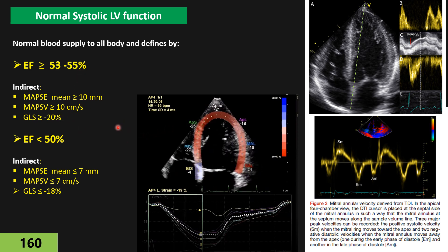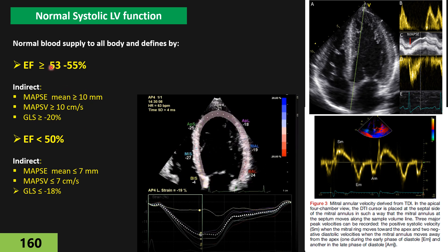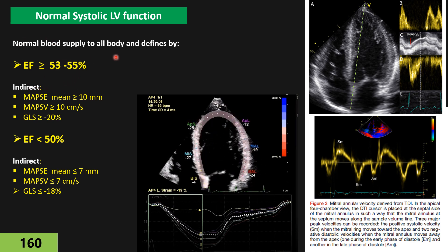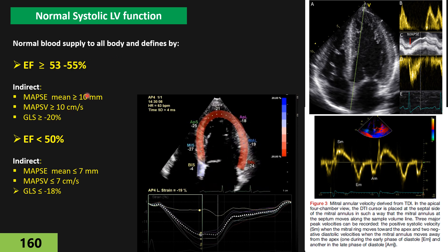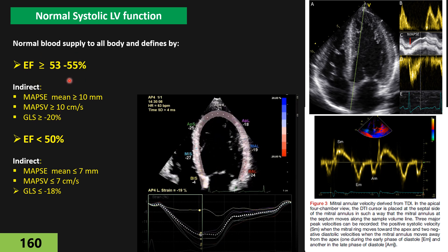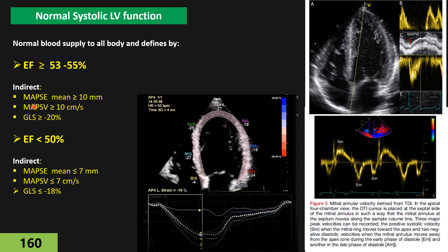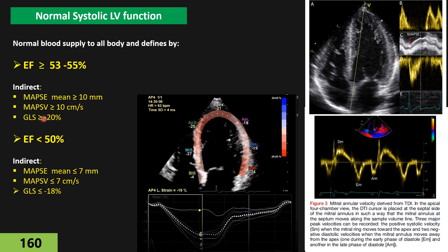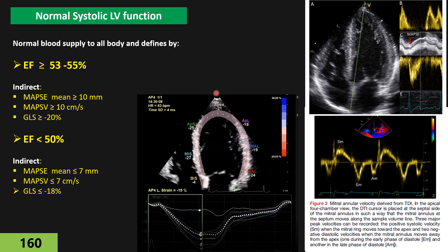Normal EF by Simpson or biplane disc method is equal to or more than 53% in males and equal to or more than 55% in females. Beside EF, there are other indirect parameters we can use to evaluate ejection fraction. Among them, three more reliable parameters are MAPSE (mitral annulus plane systolic excursion), MAPSV — mitral annulus peak systolic velocity by TDI tissue Doppler — and finally global longitudinal strain by speckle tracking echocardiography.